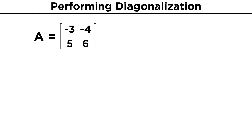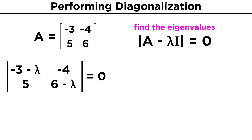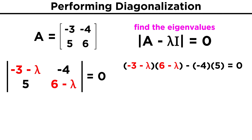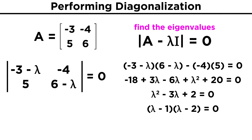Let's look at an example. Consider the matrix A with entries negative three, negative four, five, six. We must first find the eigenvalues, which means we must solve for the values of lambda that satisfy this expression, where the determinant of A minus lambda I equals zero. Taking this determinant, we get negative three minus lambda, times six minus lambda, minus six lambda, plus lambda squared, plus twenty equals zero, which when simplified gives us lambda squared minus three lambda plus two equals zero. By factoring this, we see that lambda minus one times lambda minus two equals zero, which means our eigenvalues are lambda equals one and lambda equals two.